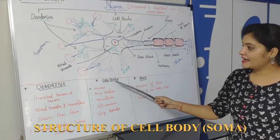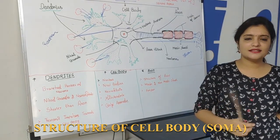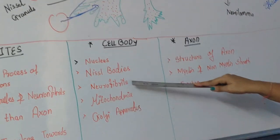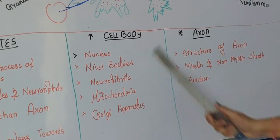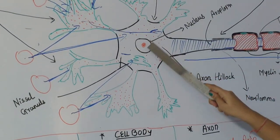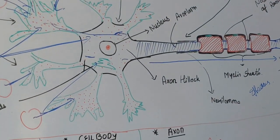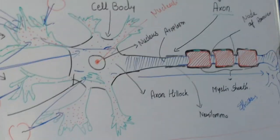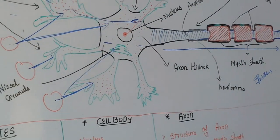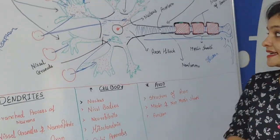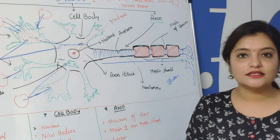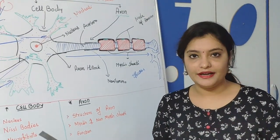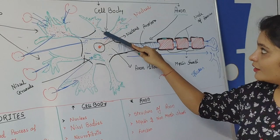Now we'll see the cell body. The cell body contains a fluid called neuroplasm, and in neuroplasm there are many organelles. The cell body mainly consists of nucleus, Nissl body, neurofibril, mitochondria, and the Golgi apparatus. This black round portion is the nucleus. Each and every cell body has a nucleus, and in the nucleus there are one or two nucleoli. This red part is the nucleolus. Basically the nucleolus contains the centrosome, which is responsible for division of the cell. But the neuron does not contain centrosome in its nucleus. That is why the cell body of the neuron cannot divide.